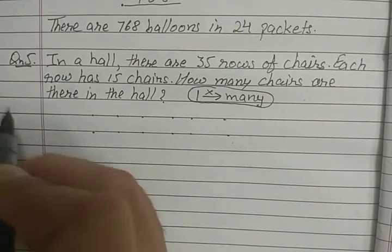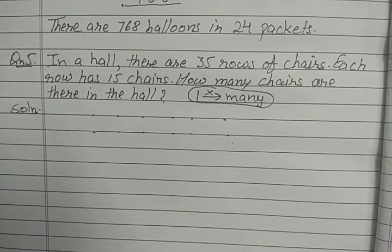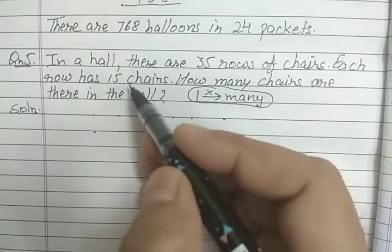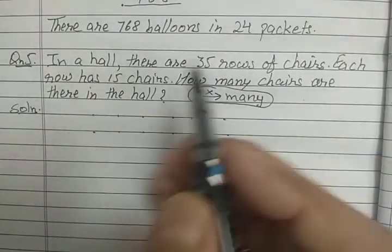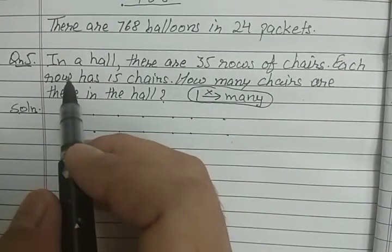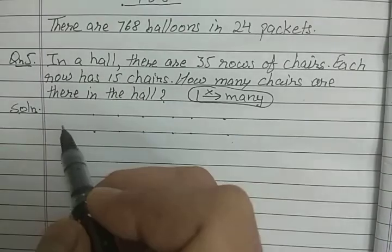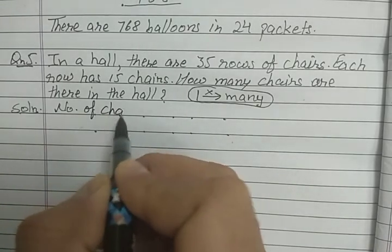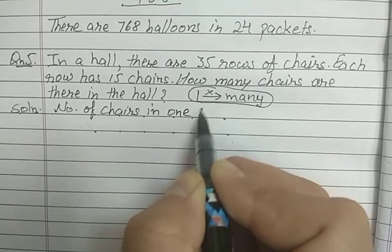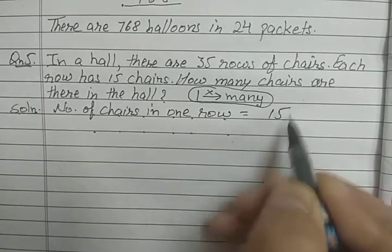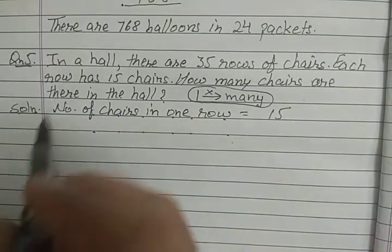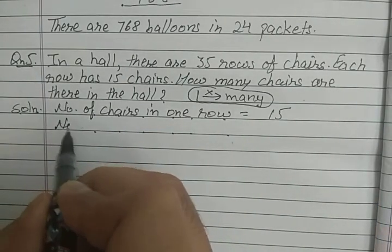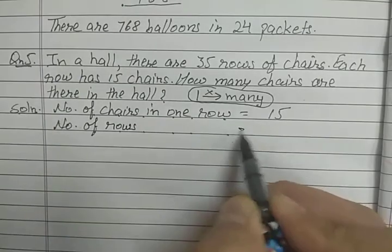So what is our first step? We have to write the given things first. Do chizein humko given hain: 15 and 35. Number of rows is 35, and number of chairs in one row is 15. Number of chairs in one row is 15, and number of rows is 35.